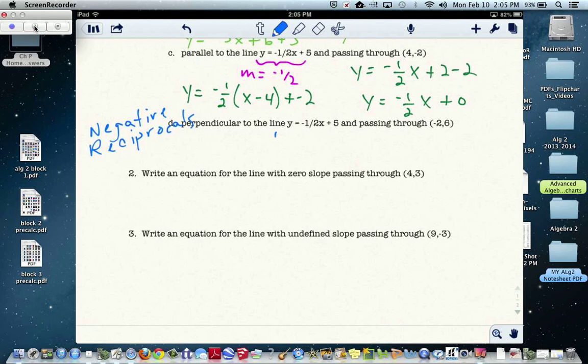So right now, the given slope is negative 1 half. The perpendicular slope, then, is 2 over 1, or positive 2.